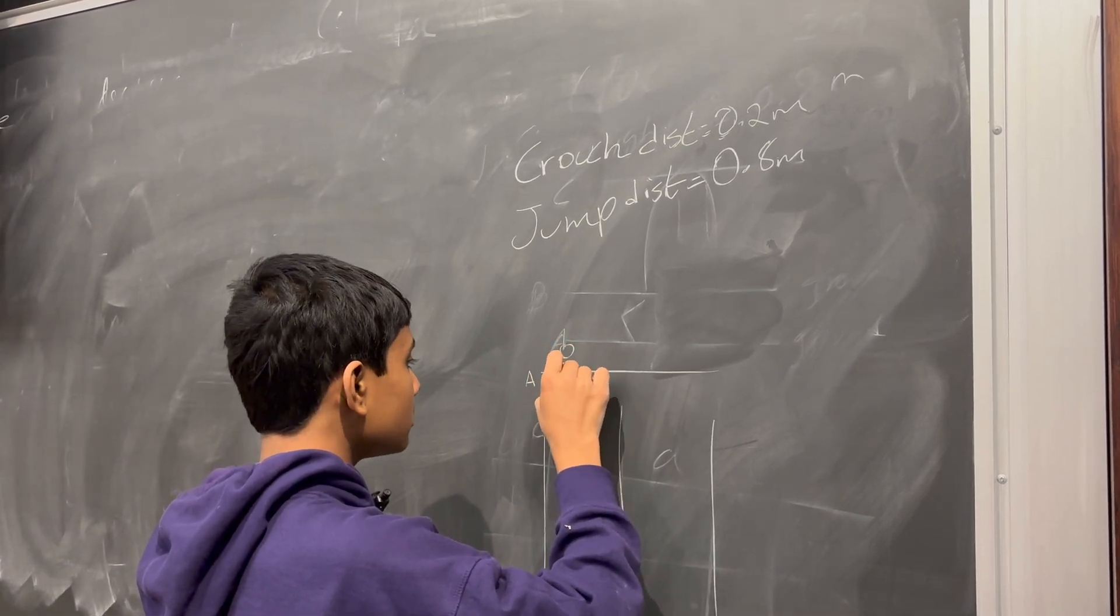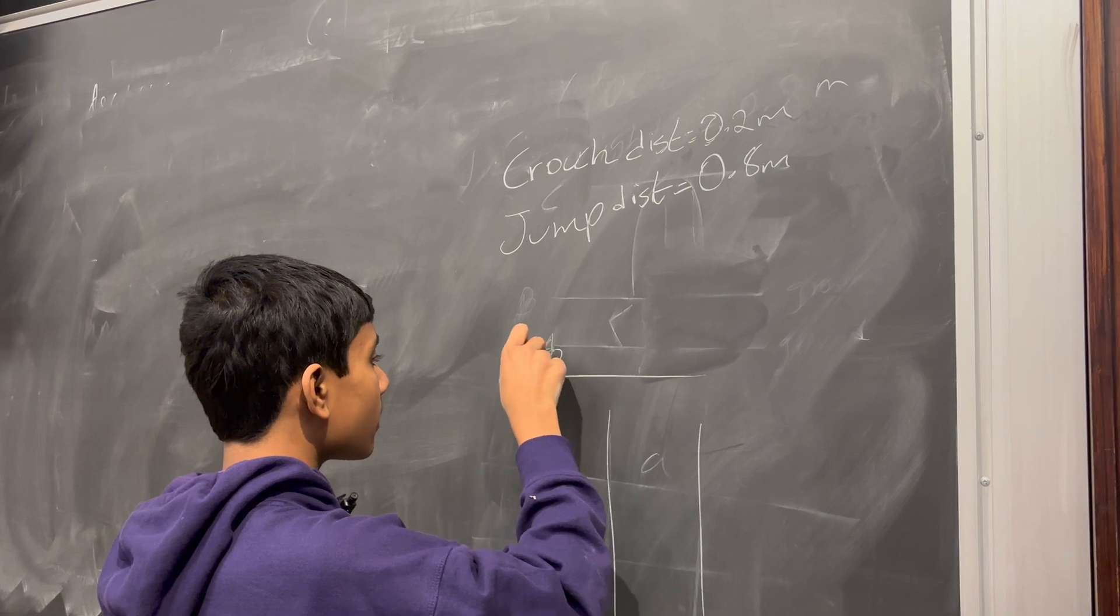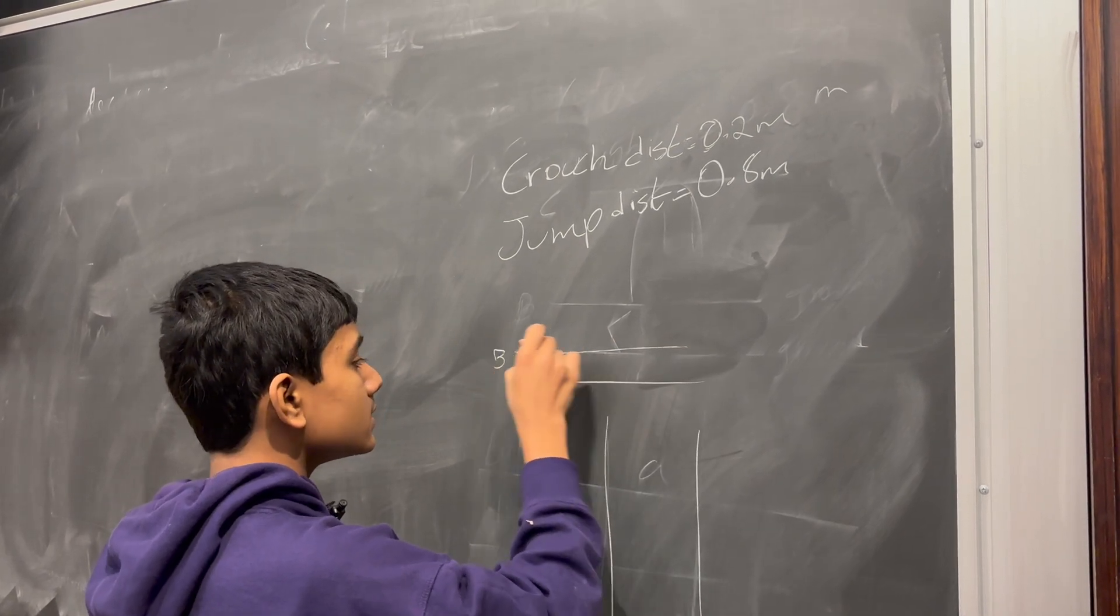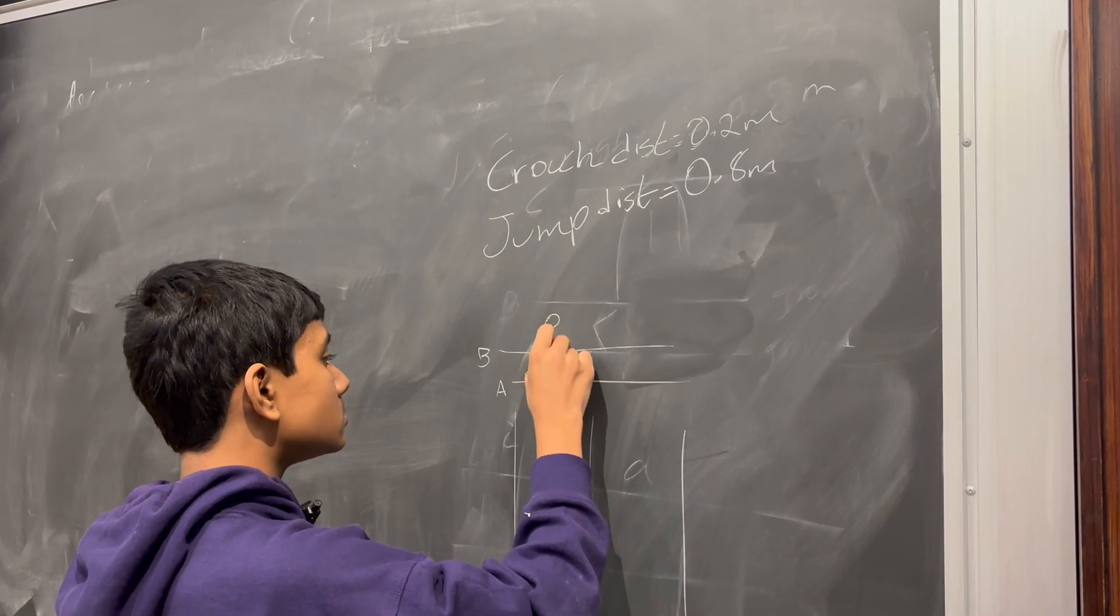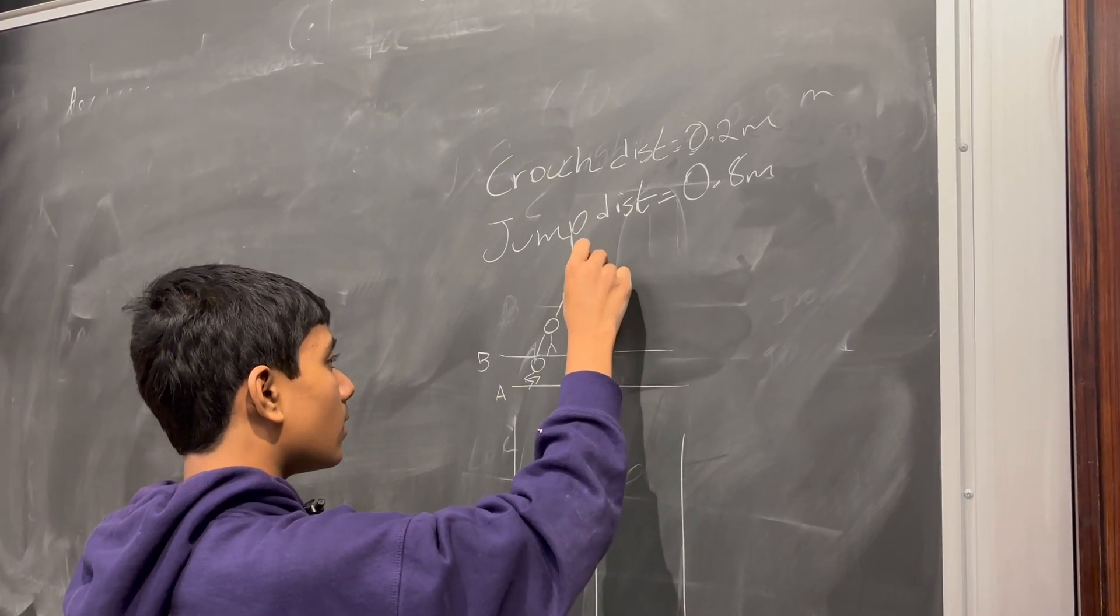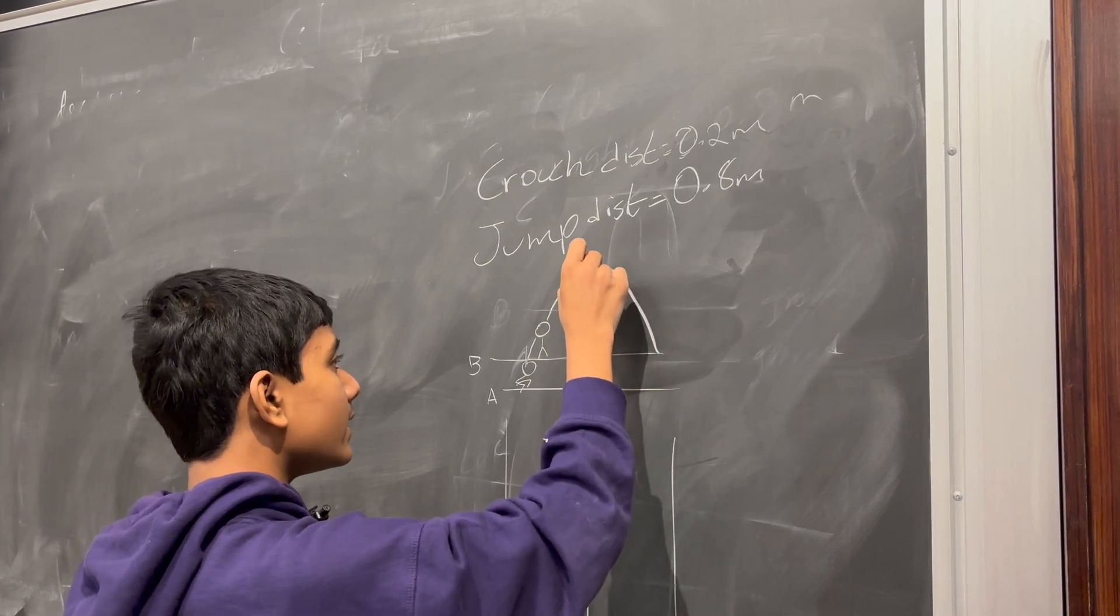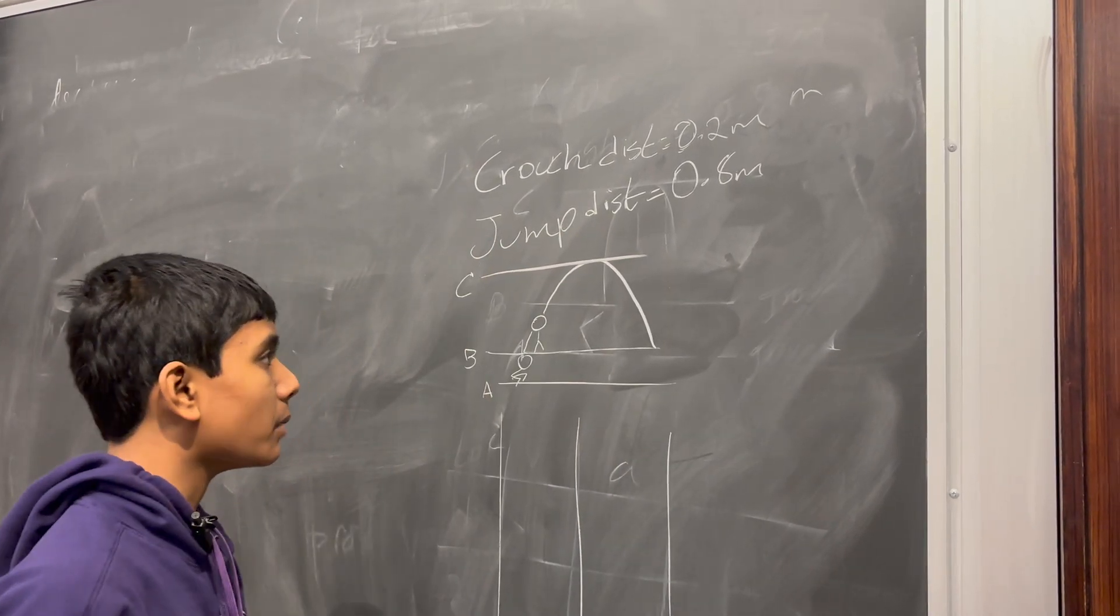He's on the ground. Then, at point B, he makes the jump. And then, at point C, he reaches a maximum height.